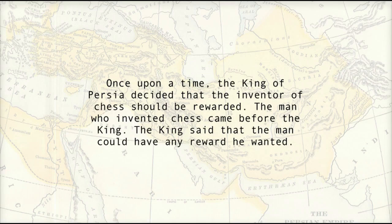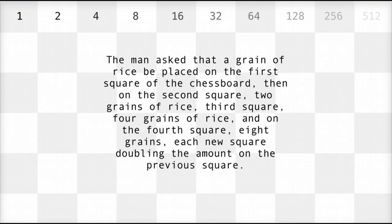There's an old fable that goes something like this. Once upon a time, the king of Persia decided that the inventor of chess should be rewarded. The man who invented chess came before the king. The king said the man could have any reward he wanted. The man asked that a grain of rice be placed on the first square of the chessboard, then two grains on the second square, four grains on the third square, eight on the fourth square — each new square doubling the amount on the previous square.